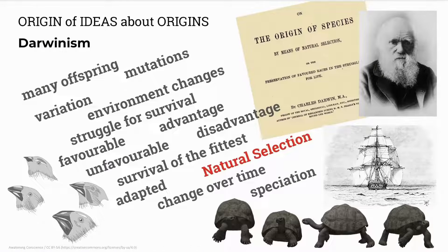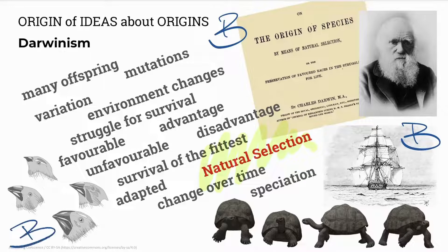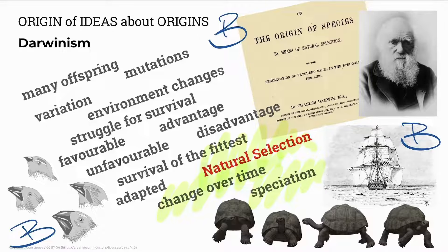Darwin, on the other hand, explained evolution in terms of a mechanism called natural selection. Darwin wrote a book called On the Origin of Species. He traveled around the world in a boat called the HMS Beagle, and he studied birds on the Galapagos Islands, as well as many other animals. He proposed that species change very slowly over time — we call that speciation to form new species — and these slow changes are known as gradualism.